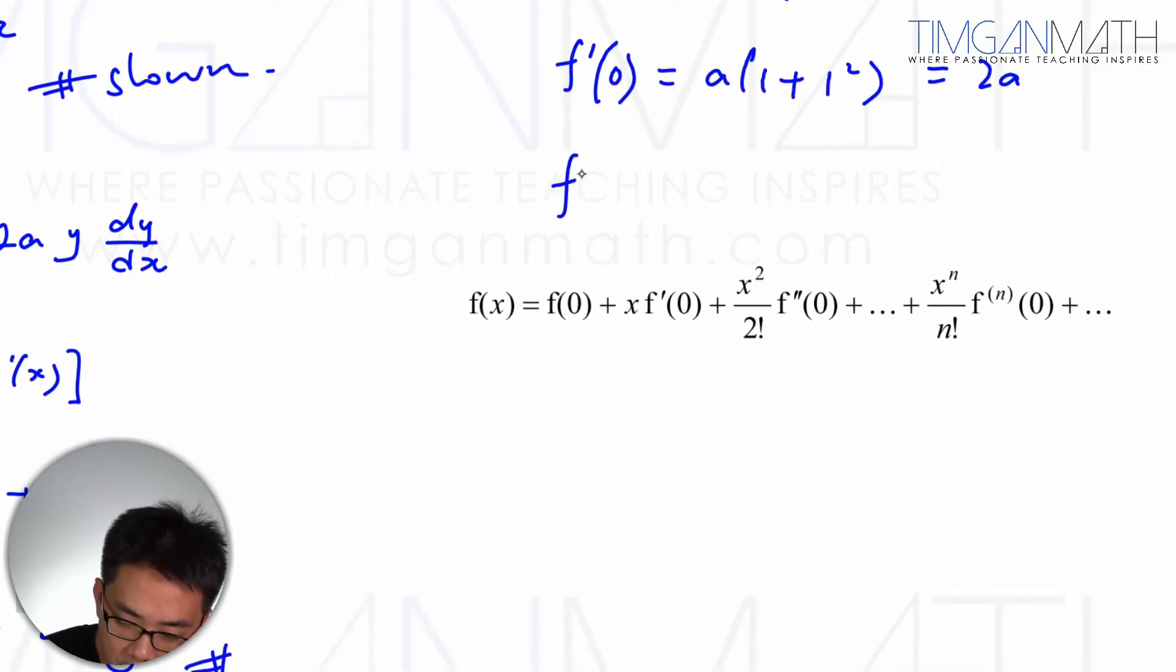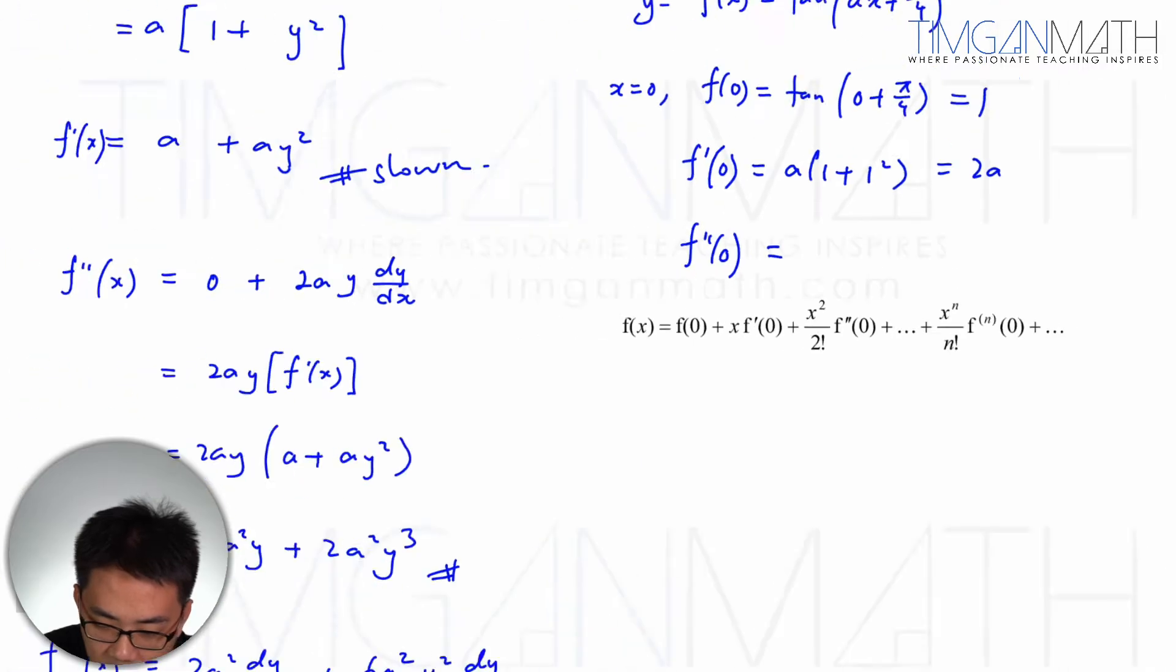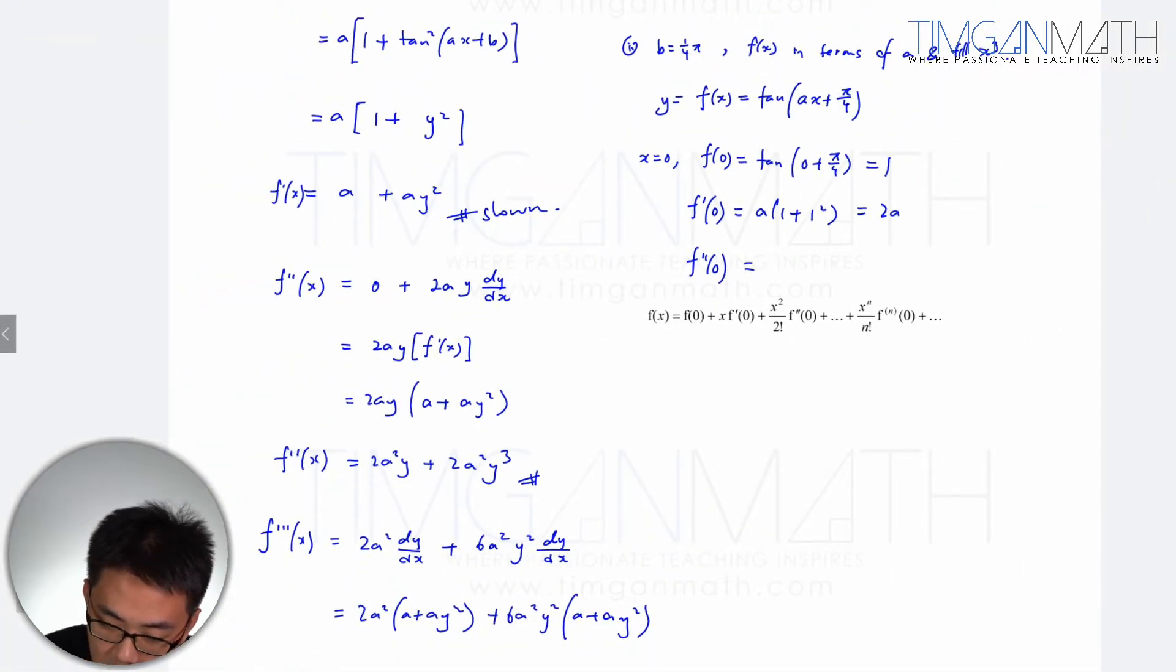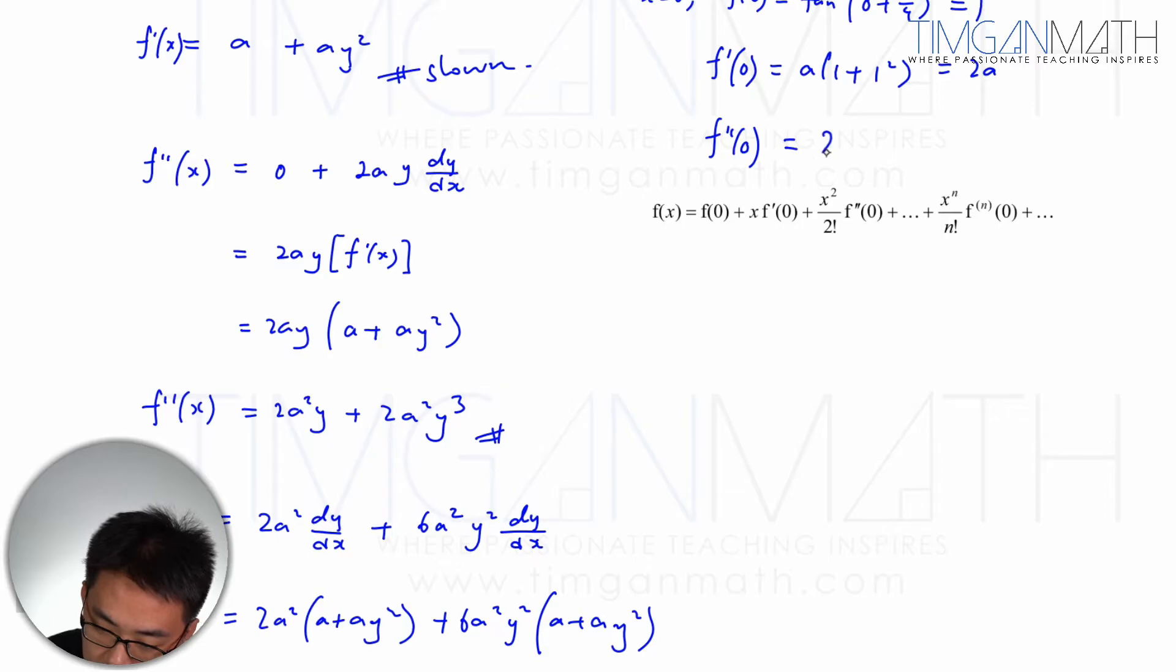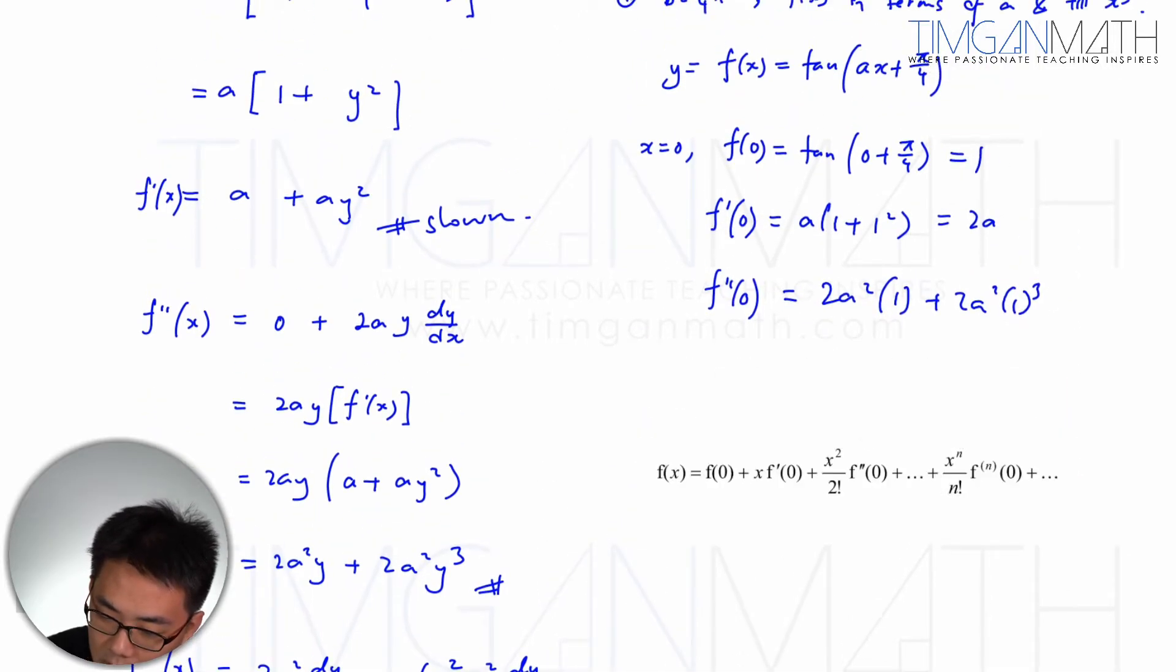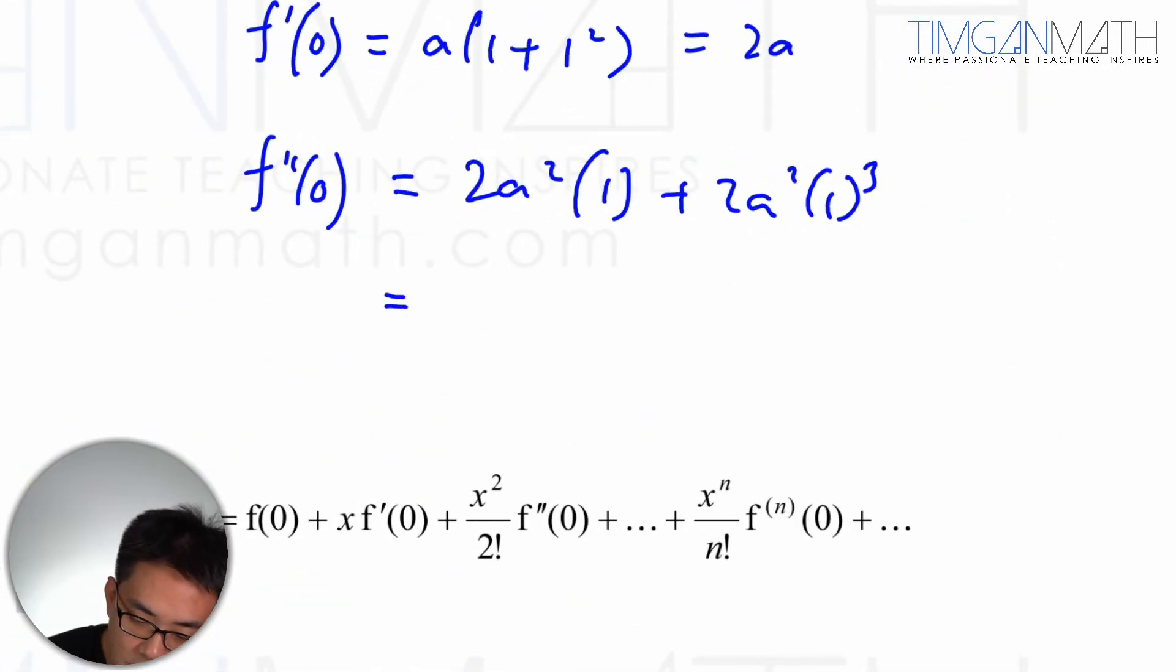Then after which, f''(0), f''(0) is here. This one here. So I'm going to just put 2a²(1 + 2a²·1³), which will give us 4a². Okay, that's pretty okay.